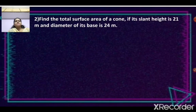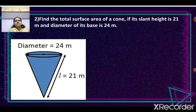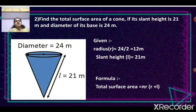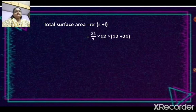Second sum: Find the total surface area of a cone if its slant height is 21 m and the diameter of the base is 24 m. The diameter is 24 m, so the radius = 24 ÷ 2 = 12 m. Slant height L = 21 m. The formula for total surface area is πR(R + L). Substituting: (22/7) × 12 × (12 + 21) = (22/7) × 12 × 33.